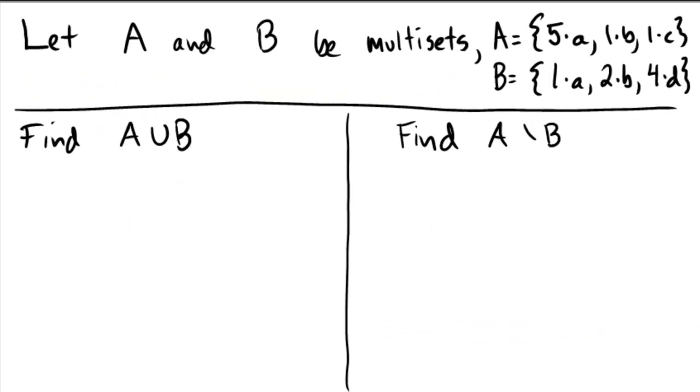Here we're working with some multi-sets. So set A is five A's, one B, and one C. Multi-sets essentially allow you to have multiplicity of certain elements.